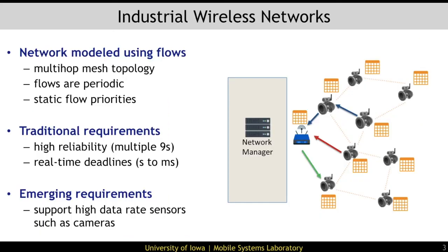Traditionally, the workload of an industrial application is specified as a set of multi-hop and periodic flows. A periodic flow releases a new packet at a known and fixed rate. A centralized controller uses the workload specification to construct a schedule that determines when each node transmits or receives. These schedules are disseminated to all nodes, which execute them in a synchronous manner. Due to the critical nature of the applications these networks support, packets released by flows must be delivered to their destination with a high degree of probability, usually 99% or higher. Moreover, packets must be delivered within deadlines that range from seconds to milliseconds.